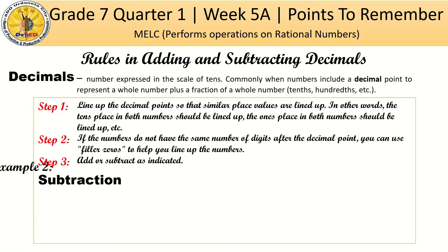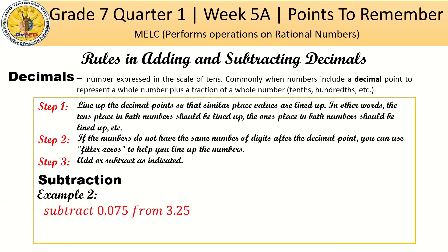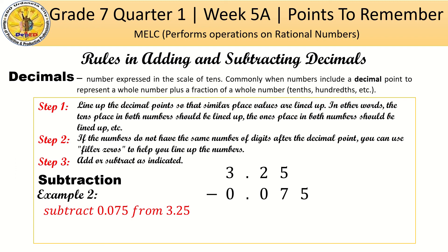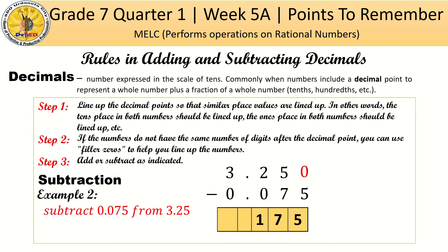Let's proceed to subtraction. Subtract 0 and 75 thousandths from 3 and 25 hundredths. Write it out and add filler zeros. Since we have 0 in the last place, we need to borrow 1 to make it 10. 10 minus 5 is 5. Borrow 1 from 2, making it 4. We have 14 minus 7 is 7. Then 1 minus 0 is 1. Copy the decimal point. 3 minus 0 is 3. The answer is 3 and 175 thousandths.